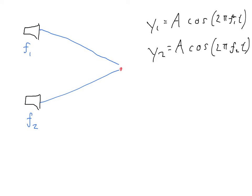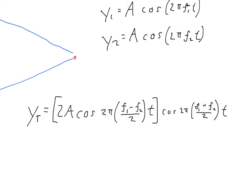We can do the same for the second equation, and we'll say they're the same amplitude to keep the math simple. So Y2 is amplitude times cosine of two pi times frequency two times time. Now we want to add these two together. Using trig identities, the total waveform we get has this interesting form: two times amplitude, times cosine of pi times (f1 minus f2) times time, times cosine of pi times (f1 plus f2) times time. We see that if f1 and f2 are the same, the difference term is zero, cosine of zero is one, and we just get the normal waveform adding together.